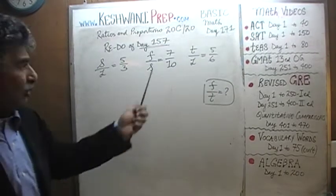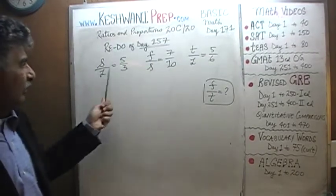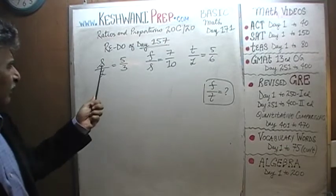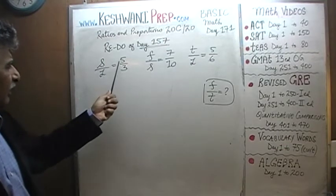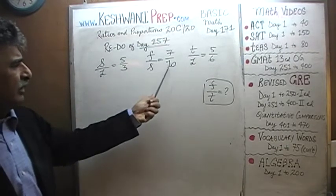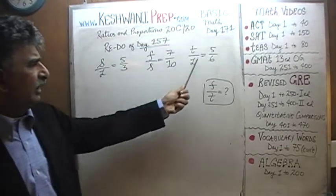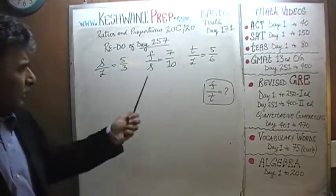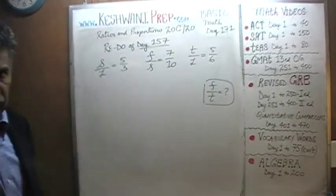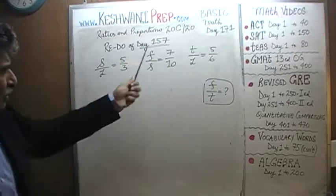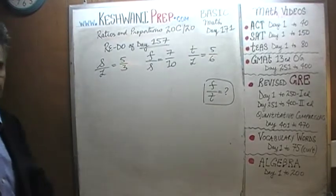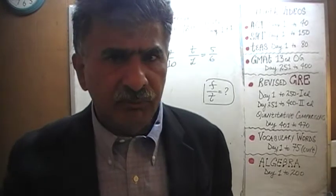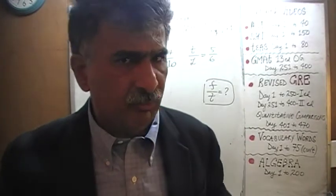So these are the four ratios. If you watch the videos you will see what each ratio stands for. The ratio of S to L is 5 to 3, F to S is 7 to 10, and T to L is 5 to 6. The question simply is: what's the ratio of F to T? If you have not watched day 157, try it yourself first without watching it and see what you can do.